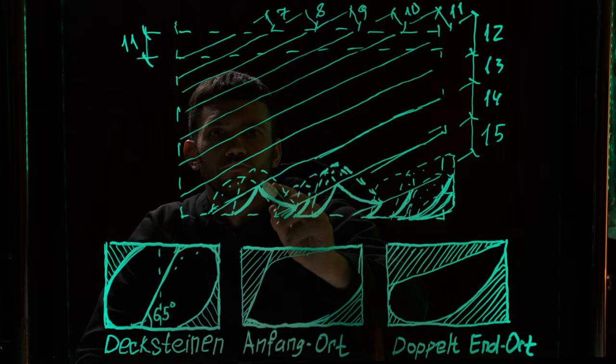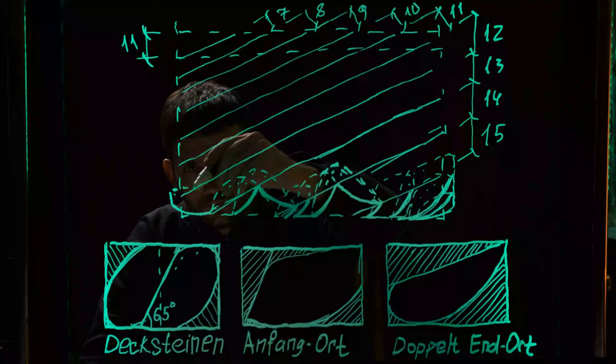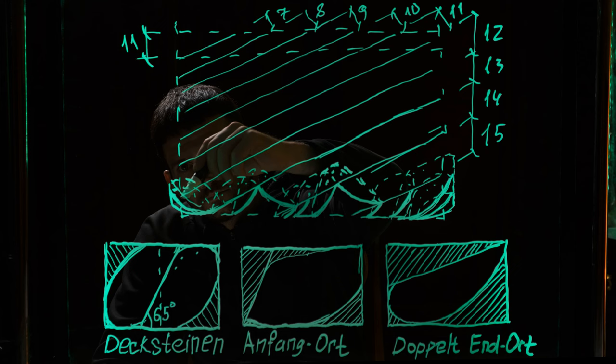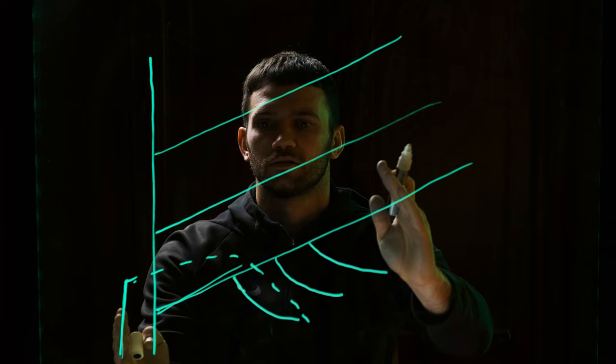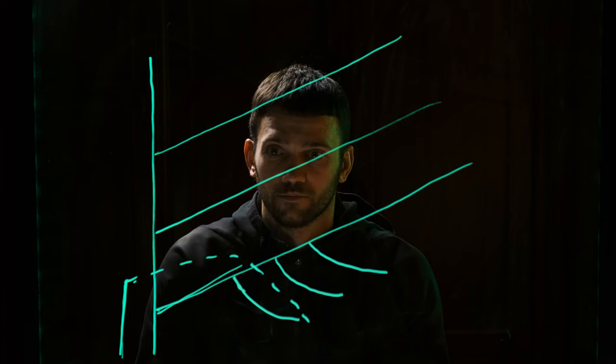We approached our first Anfang Ort. Look, there is a main rule in old German slating: each row begins and ends in a special way. And now I will show you how to make the beginning of the row beautifully and expressively. Anfang Ort. We try to make it as long as possible, within the limits of our stone 16 by 10 inches. Ideally its length should be equal to the width of three Dexteins. Before showing how to do it, I want to show how not to do it.